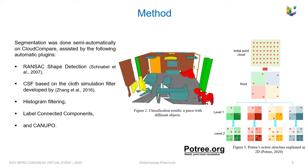Potree uses a variation of the modifiable nested Octree structure with a different subsampling method and a partition of the hierarchy into smaller, quickly streamable chunks.